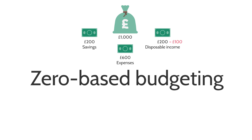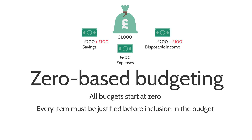So what we're going to do is deduct £100 from our disposable income budget and put it into our savings — we're now saving £100 more. We're actually looking at our expenditure, considering whether or not it can be justified, and then adapting our budget based on that. And that's what zero-based budgeting is.